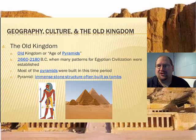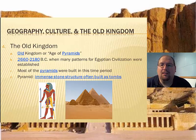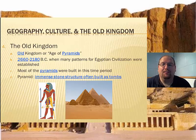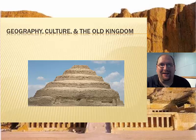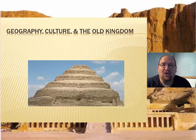Let's take a look at some of the players during the period known as the Old Kingdom. The Old Kingdom is also known as the Age of Pyramids — you can probably guess why. This was from about 2660 to 2180 BC, when many patterns for Egyptian civilization were being established. A pyramid is an immense stone structure often built as a tomb. What historians have determined with good certainty is that the Step Pyramid would have been the first pyramid — built by the Egyptian king Djoser. An interesting fact is that it was designed by his high advisor known as Imhotep, who was also one of the main characters in the movie The Mummy.